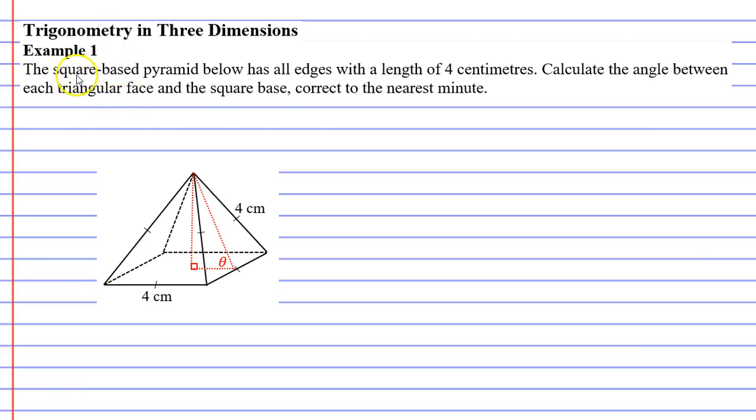Now in this example, the square-based pyramid below has all edges with a length of four centimeters. So not only does the square have edges with lengths of four centimeters, but our slant lengths are also four centimeters. It wants you to calculate the angle between each triangular face and the square base correct to the nearest minute.